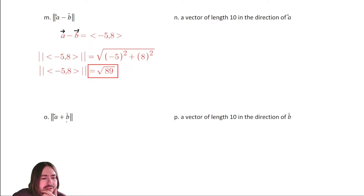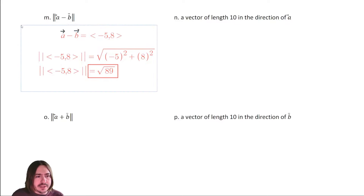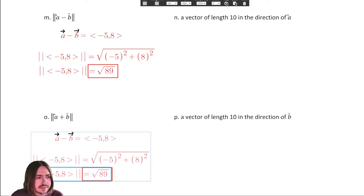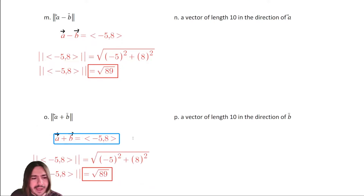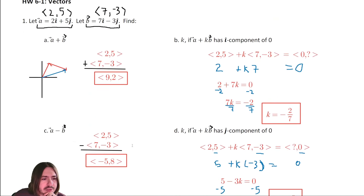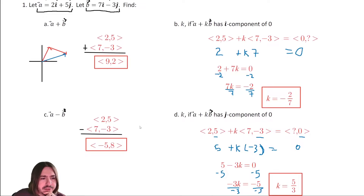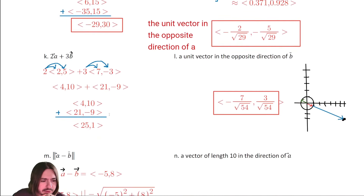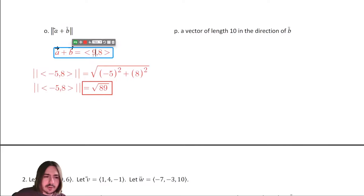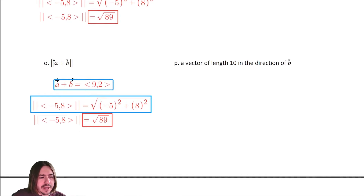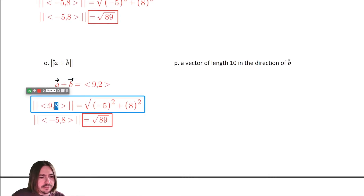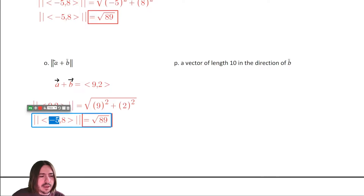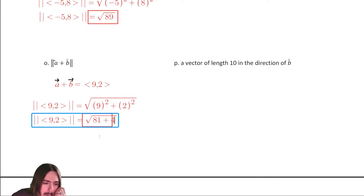Letter O: find the magnitude of the sum. We already found the sum in the very first problem — it was nine comma two. Using the Pythagorean theorem: the magnitude of nine comma two equals the square root of nine squared plus two squared, which is eighty-one plus four, equaling eighty-five. So the magnitude is root eighty-five.